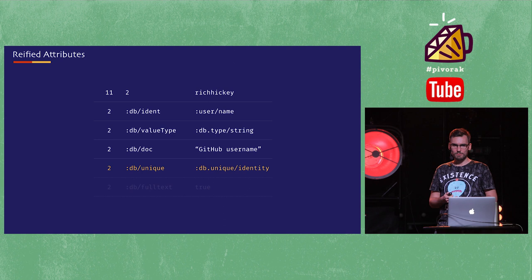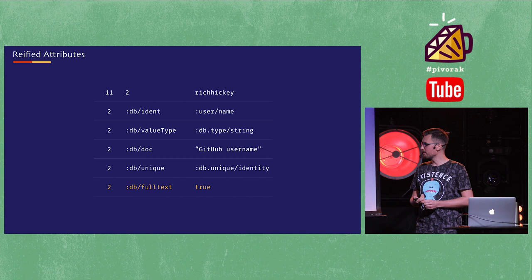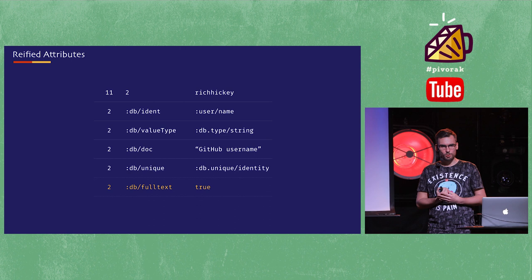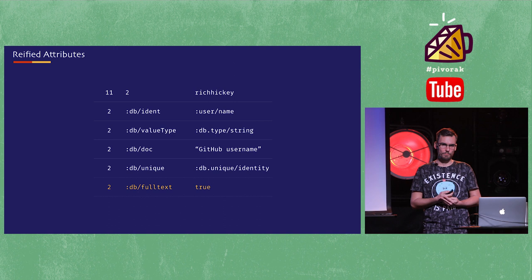You can also specify uniqueness constraints, so the system can verify during transactions that values are unique. You can even give hints — like in Datomic, if you give it a 'db/fulltext: true' hint on an attribute, it'll know that in the future you're going to want to do full-text searching on this specific attribute, so it better have a Lucene index ready to go for that attribute.